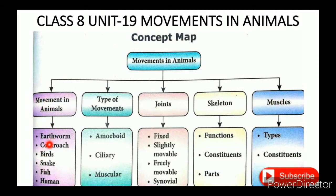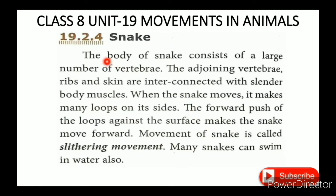Now the second topic is the type of movement. The body of a snake consists of a large number of vertebrae. The vertebrae and the skin are interconnected with slender body muscles.